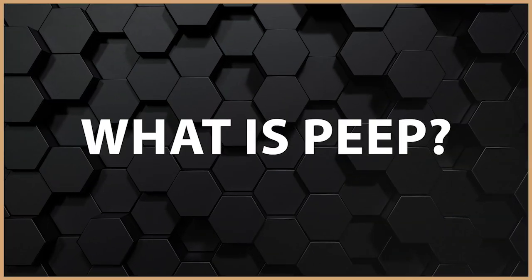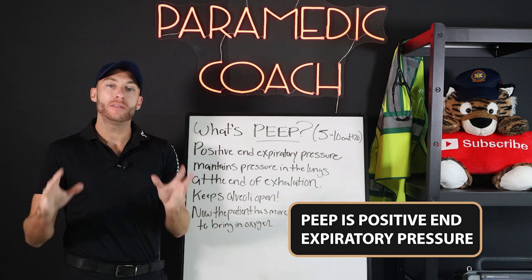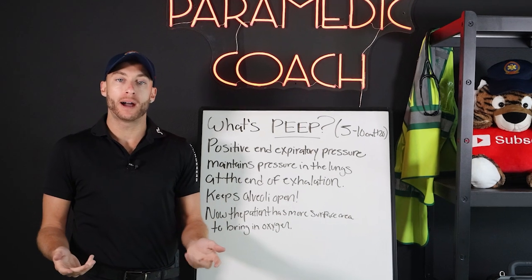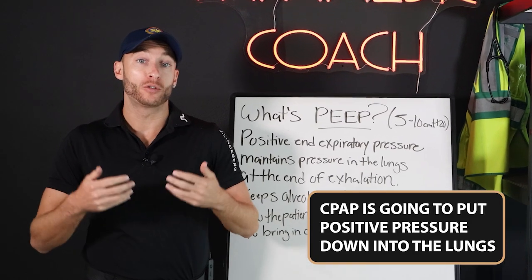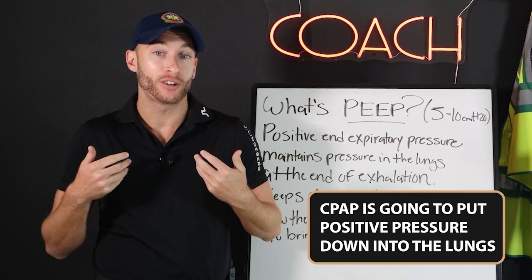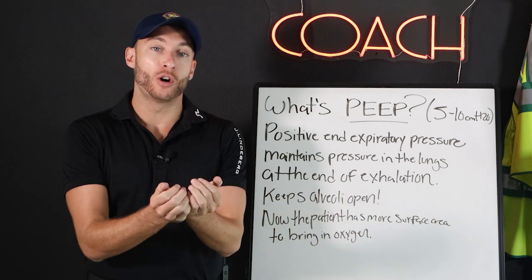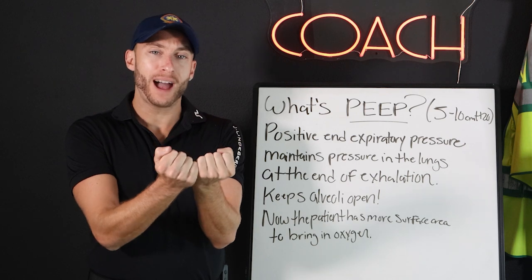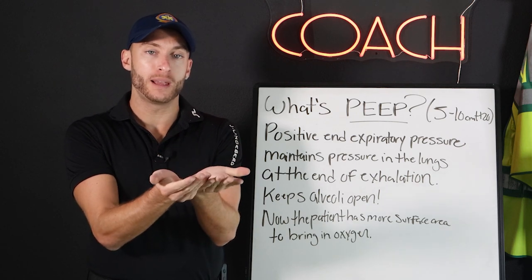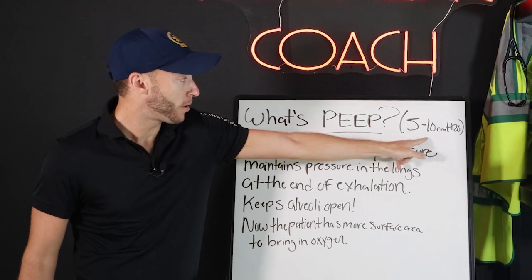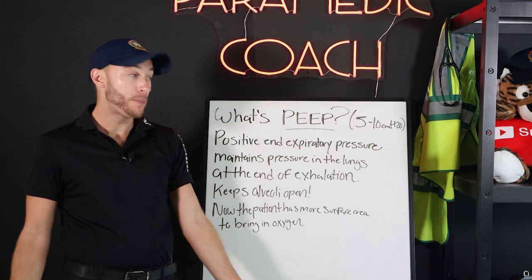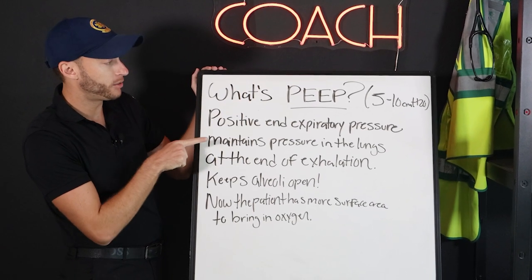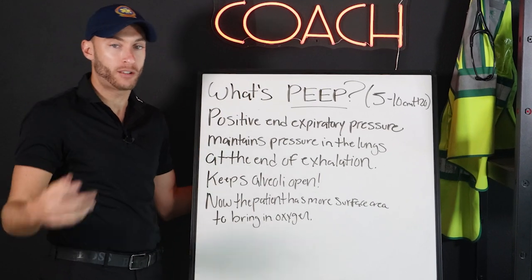What exactly is PEEP? PEEP is positive end-expiratory pressure. CPAP puts positive pressure down into the lungs to open up the alveoli. If an alveolus has fluid or is collapsing, CPAP opens it up and keeps it open — that's PEEP. When you give CPAP, you're measuring how much PEEP to give the patient. If you hear about PEEP on a test question, that's what it is.